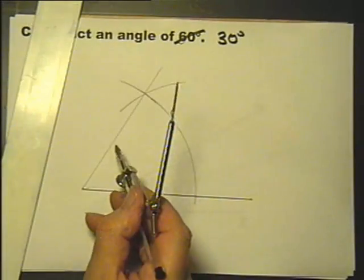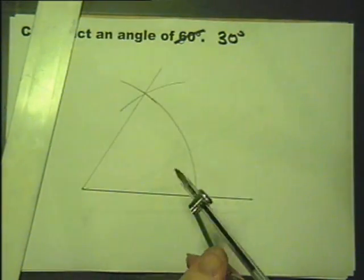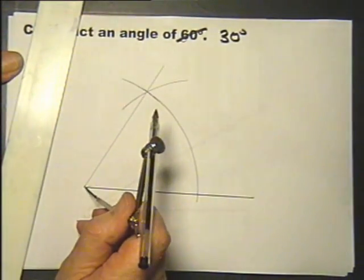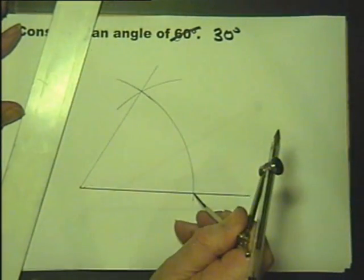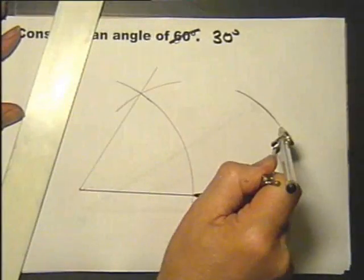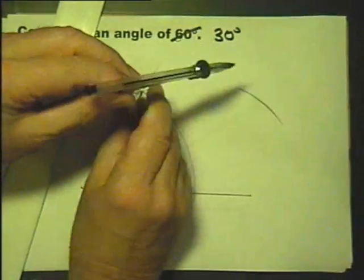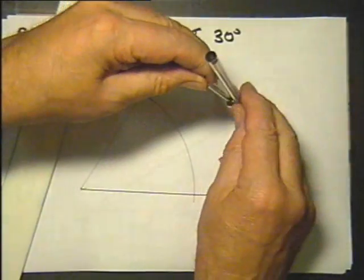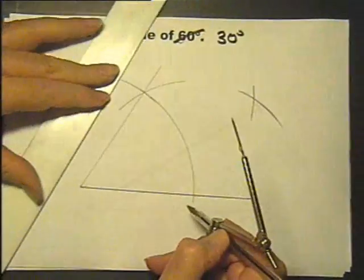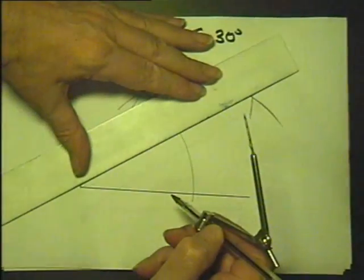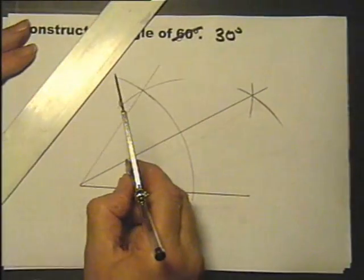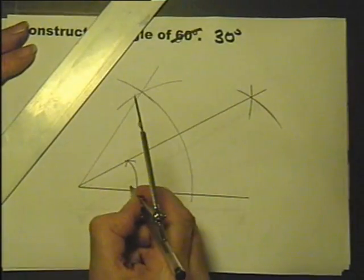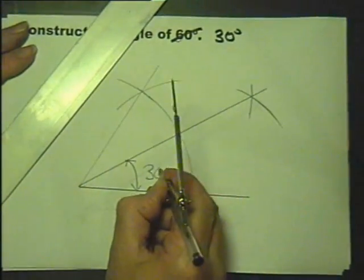That is 60 degrees, we've now got to bisect it. So we do what we did on the bisecting of angles. Any radius, it might as well be that one again. Stick the compass in there, stick the compass one in there. That was 60, you have now bisected it, so you have now got half of 60 which is 30 degrees.